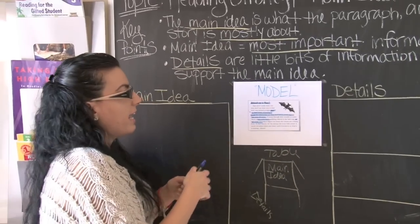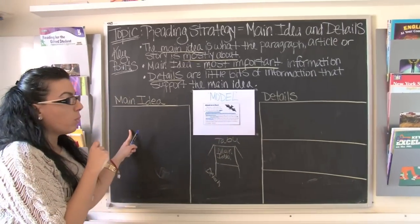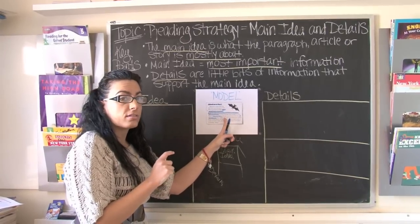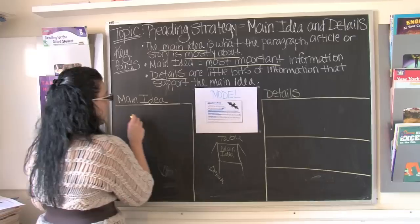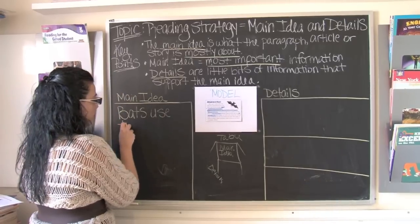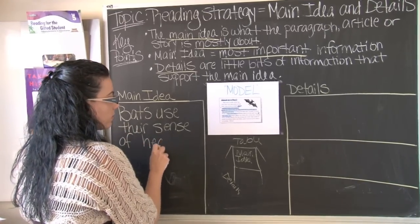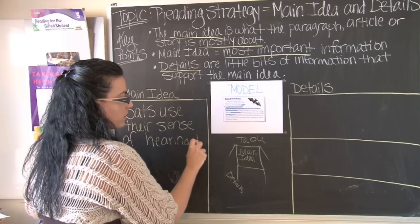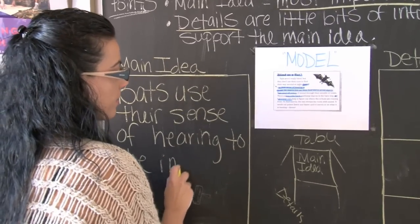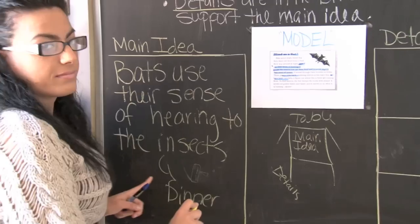So now we're going to take a look at our main idea and details. We see we have three details that have to go with one main idea. Try to think back to our table. What was the most important thing that we learned? Bats use their sense of hearing. That's our main idea. Bats use their sense of hearing to what? Let's go back to our text. To locate the insects. Also known as dinner.